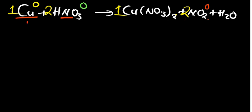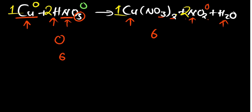Checking balance: copper — 1 on each side, balanced. Hydrogen — 2 on each side, balanced. Nitrogen — 2 on each side, balanced. Oxygen — on the left we have 6; on the right we have 6 plus 4 plus 1, giving us 11. So we have 11 on the left and 6 on the right — that's not balanced.